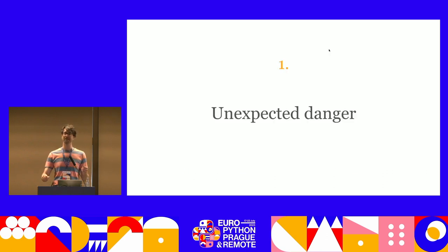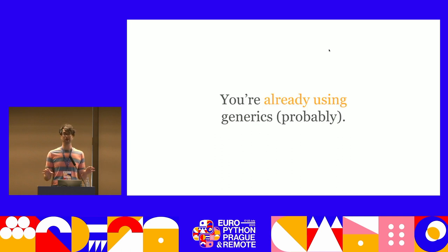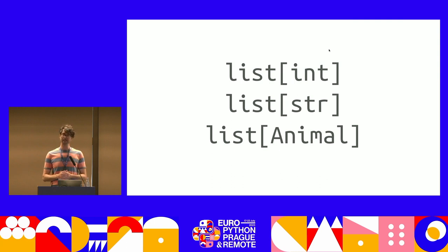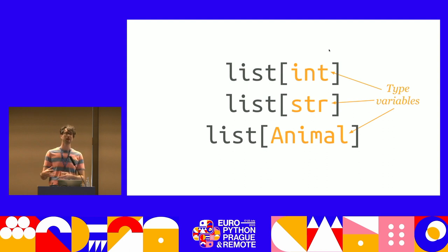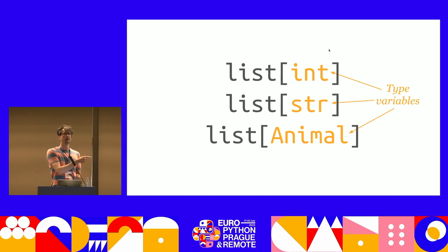Chapter one: an unexpected danger. You're probably already using generics if you use type annotations — things like a list of integers, a list of strings, a list of animals. All of these types passed into the square brackets of list are type variables. They're types that you're using as a variable that you're passing in to list. Because of this, we can see that list is therefore a generic. It's not actually a concrete type; you give it a type variable and then it becomes a concrete type.